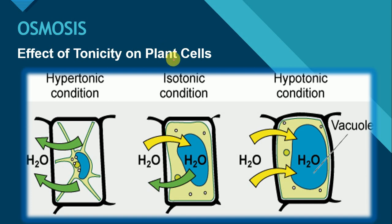Let us see the effect of tonicity on plant cells. Ab dhekhtay hai is tonicity ka plant cells pe kya effect hoota hai. Plant cell ko bhi hum same — hypertonic, isotonic, and hypotonic solution mein place karenge. Hypotonic solution mein jab plant cell ko place karenge, the water will move outside and the cytoplasm will shrink. Isotonic solution mein jab rakhenge, then the volume will remain constant, because jitna paani cell ke andar ja raha hai, utna hi cell se bahir bhi a raha hai.